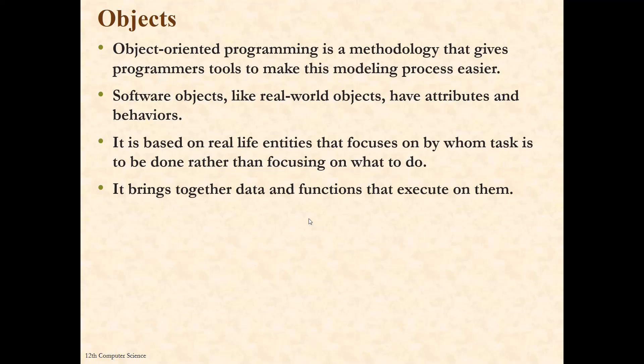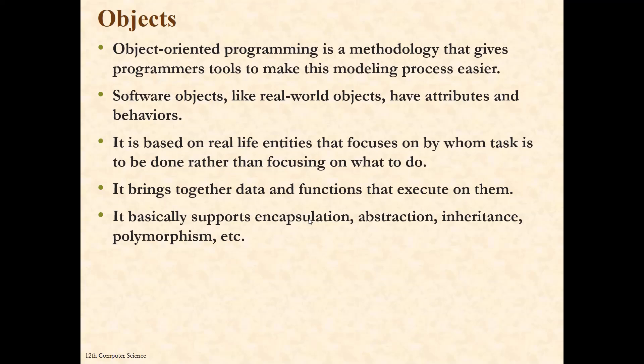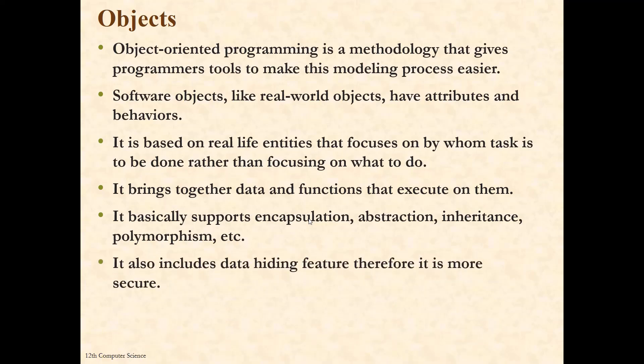There are two important things in the object: data and function. Data are also called data members, and functions are also called member functions or methods. Object-oriented programming basically supports encapsulation, abstraction, inheritance, and polymorphism. You will frequently come across these terms in the object-oriented programming chapter. Encapsulation, abstraction, inheritance, polymorphism — these are all characteristics of object-oriented programming, and all these things are supported by the object. It also includes the data-hiding feature, and therefore it is more secure. Because of the object, the data-hiding feature is possible, and therefore we can say that it is more secure in object-oriented programming.